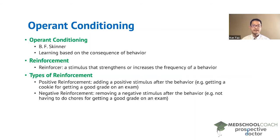Next, we have negative reinforcement. With negative reinforcement, we are still trying to increase the frequency of the behavior, but we're going to do this by removing a negative stimulus. For example, if a child gets a good grade, you can reward that child by telling him or her that they do not have to do their chores. The chores here is a negative stimulus, and you remove it when the student performs the desired behavior — getting a good grade on an exam.